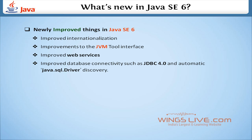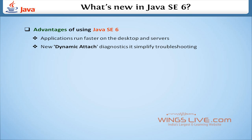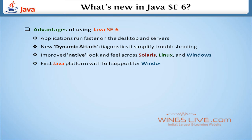Finally, let's discuss the advantages of using Java SE 6. Applications run faster on the desktop and servers. There are new dynamic attach diagnostics, simplifying troubleshooting. There is an improved native look and feel across Solaris, Linux, and Windows. Java SE 6 is also the first Java platform with full support for Windows Vista.